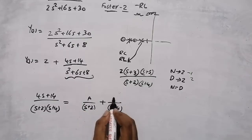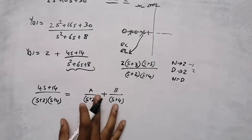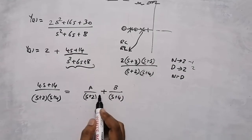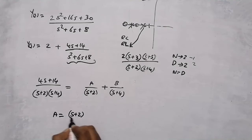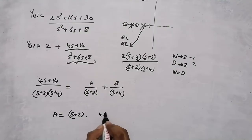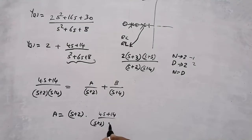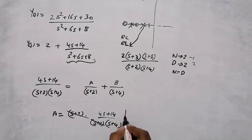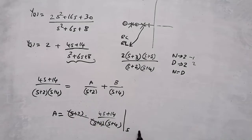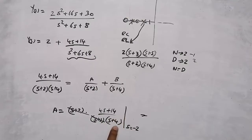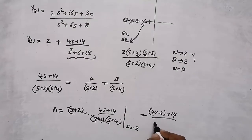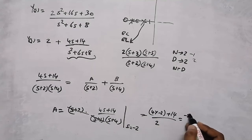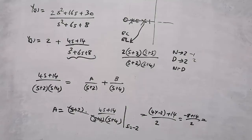To find A, multiply the function (4s + 14) / [(s + 2)(s + 4)] by (s + 2), which cancels, then put s = −2. This gives: 4(−2) + 14 / (−2 + 4) = (−8 + 14) / 2 = 6 / 2 = 3. So A = 3.